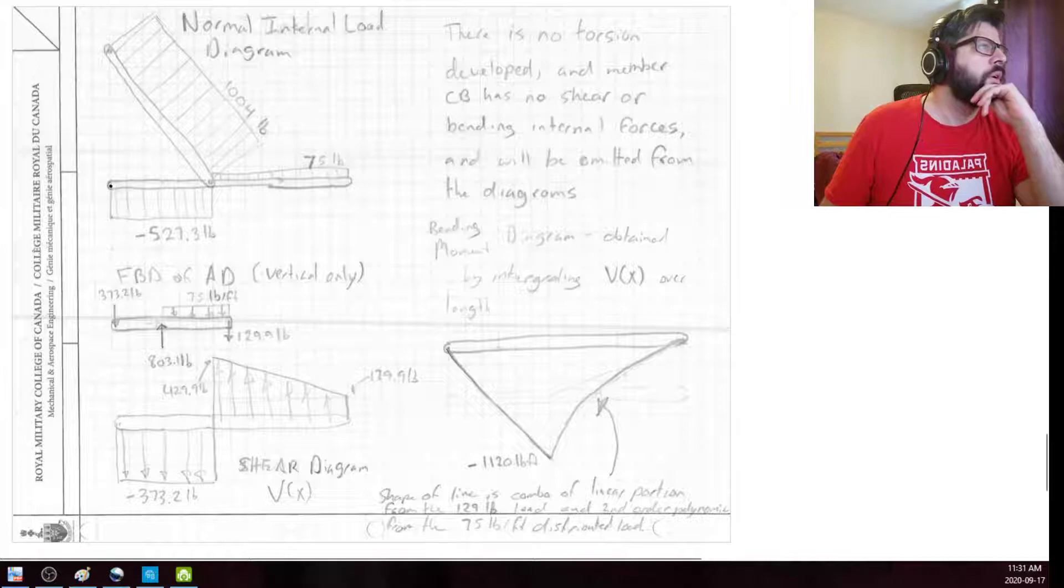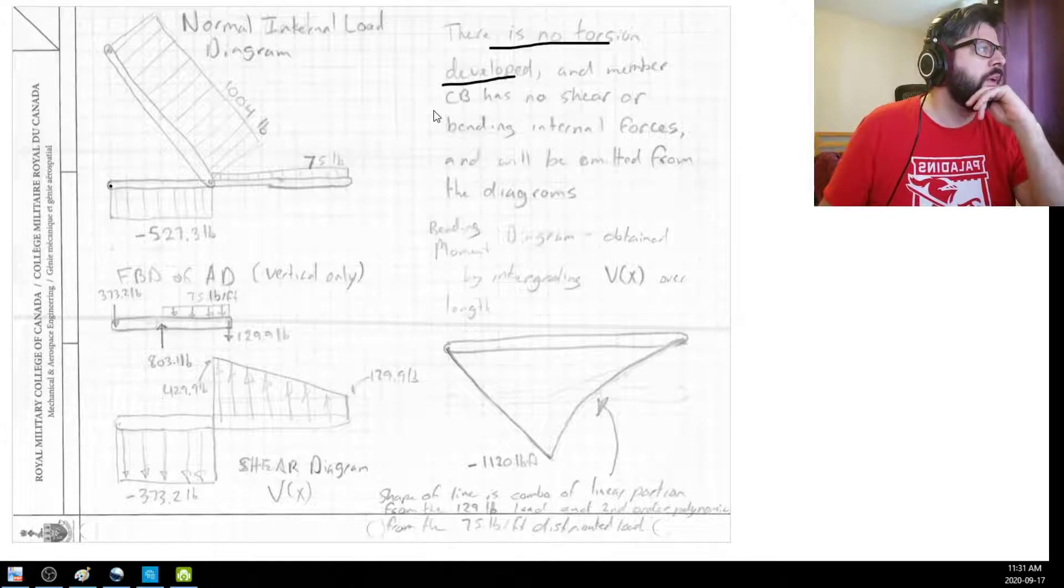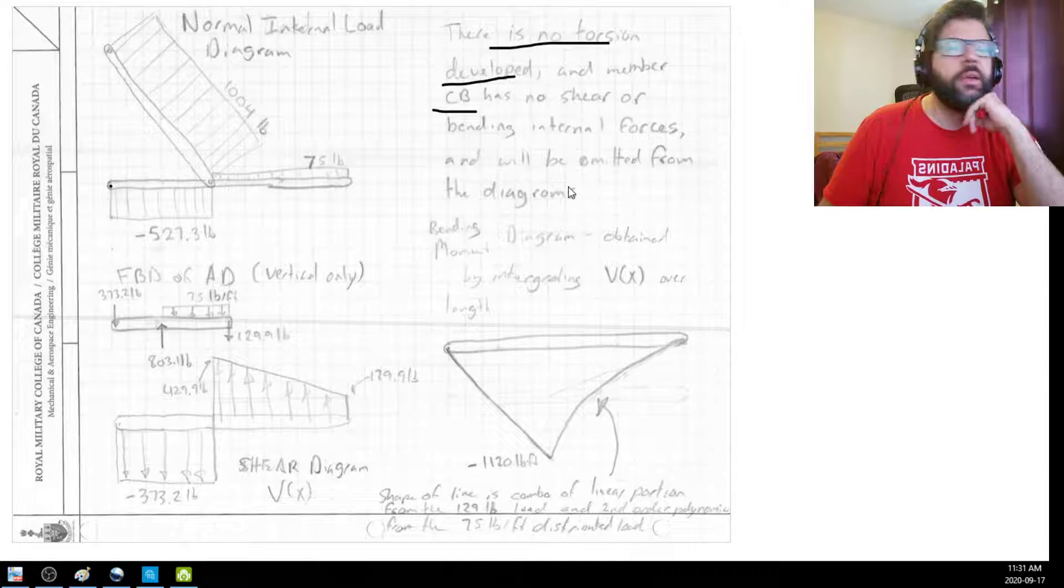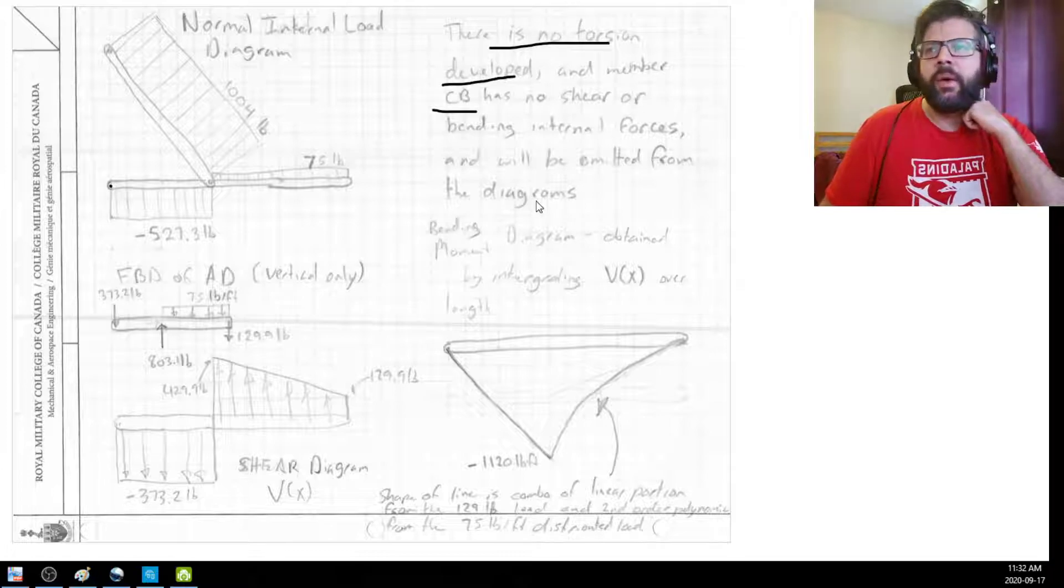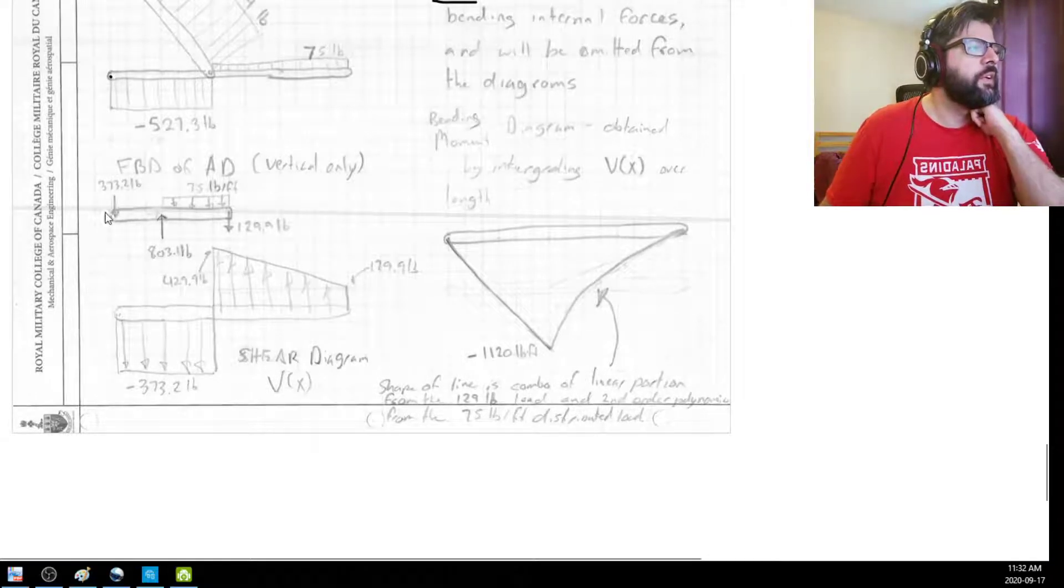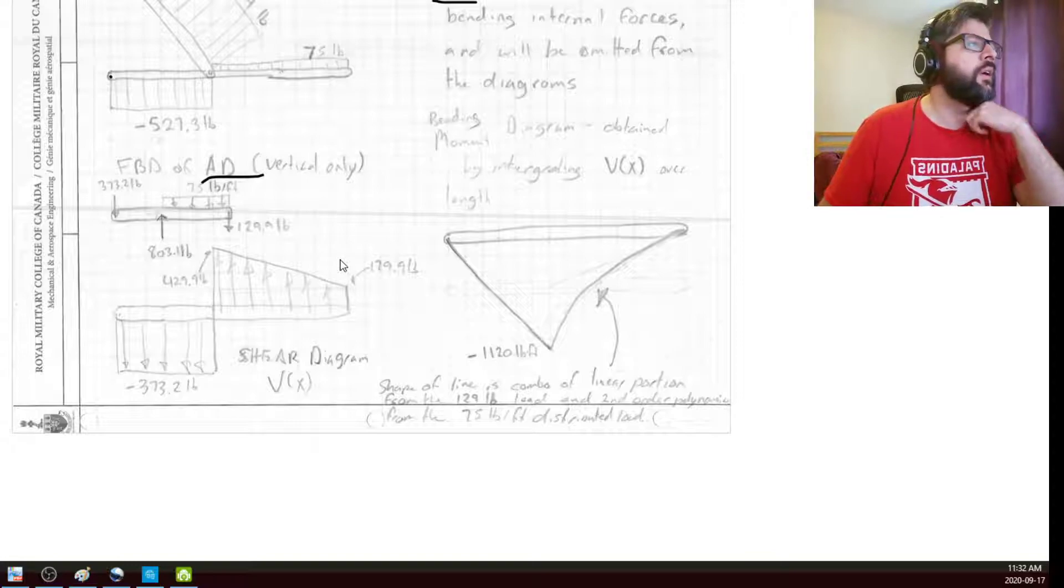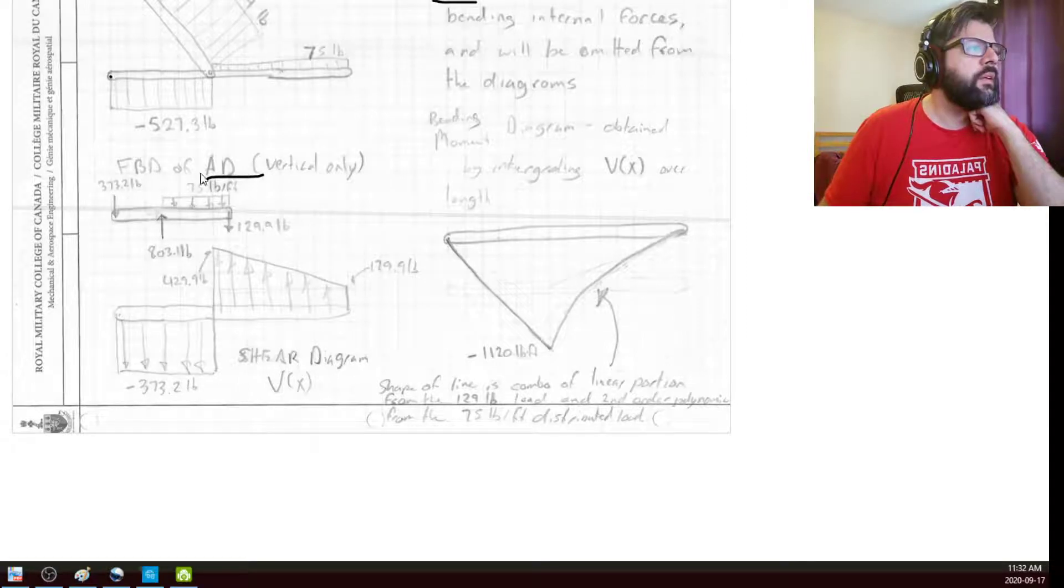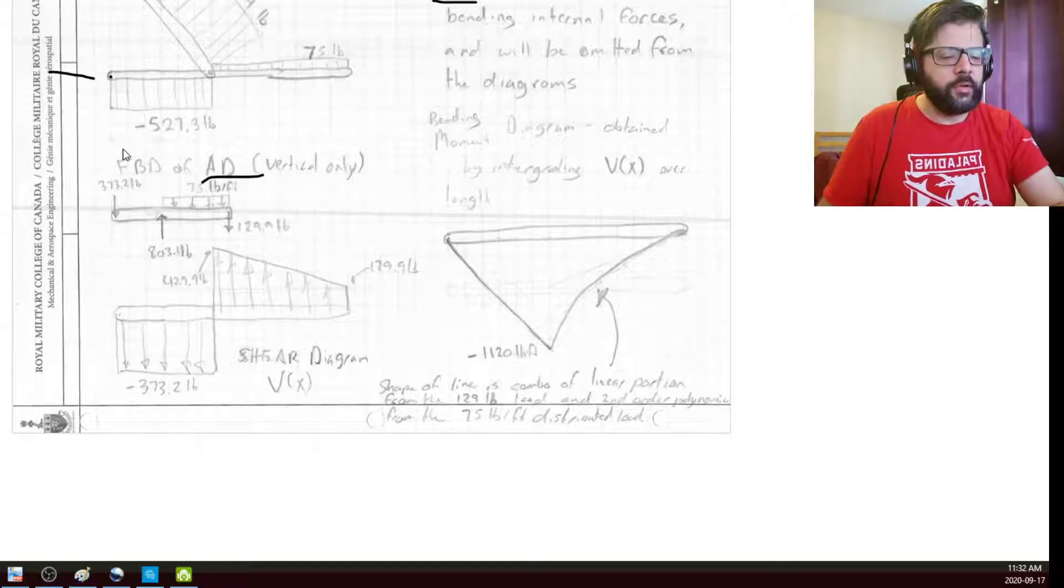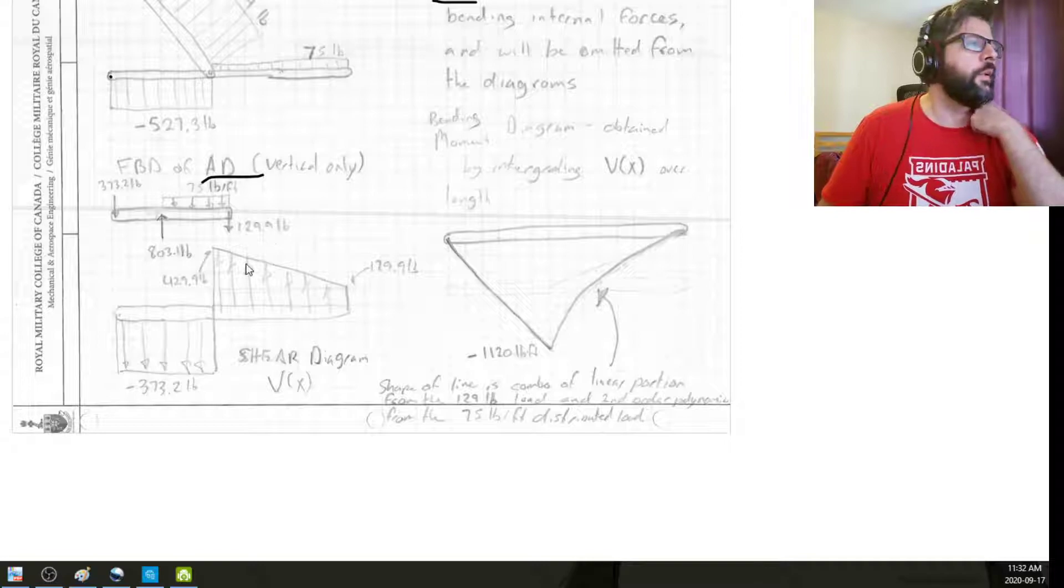Like I said, we don't have any torsion developed anywhere on here. And since the CB has no shear bending internal forces, we're going to omit that from the diagrams just to kind of get it out of the way. So, just looking at a free body diagram of AD, looking at the vertical components only, because again, we already accounted for the axial stuff. We're not worried about that. And the horizontal components aren't going to be causing any shear, or aren't going to be causing any bending. So for this portion, we're not really worried about it.